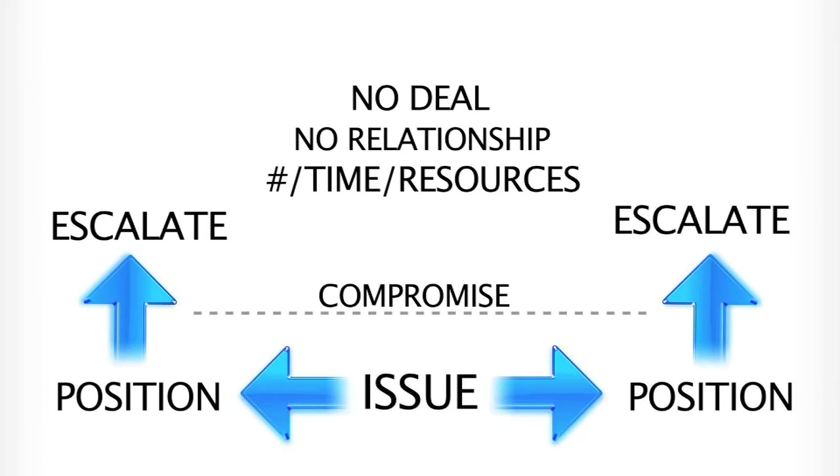What sometimes happens is, as parties escalate and gain leverage for their position, they realize that that is not going to lead to a deal. So they engage in what's called distributive bargaining and start to make compromises on those positions until they can get to a midpoint somewhere in the middle where they can decide to do business. The challenge with this is that some describe it as a win-win, but it's also a win-lose, and so there's a sense that people aren't absolutely thrilled with the deal — they're just satisfied with it.